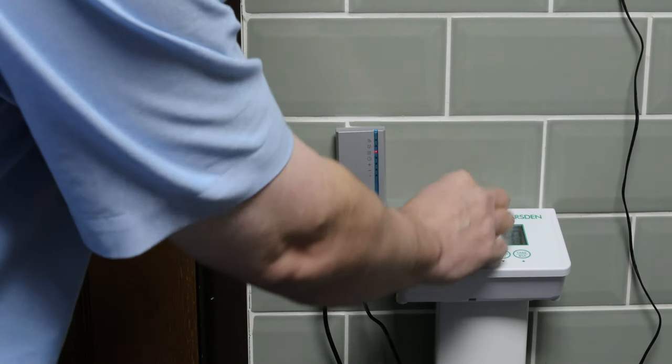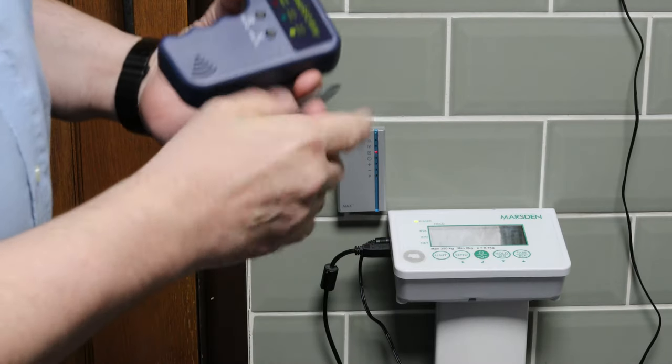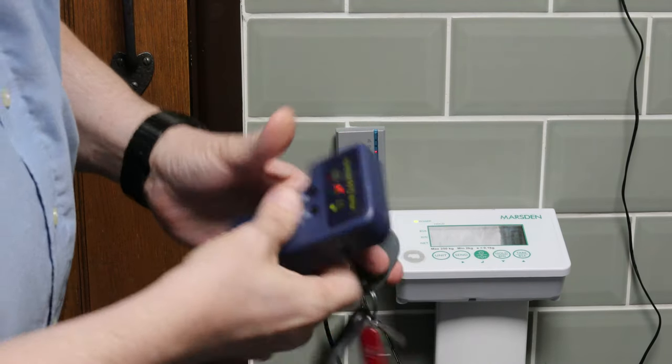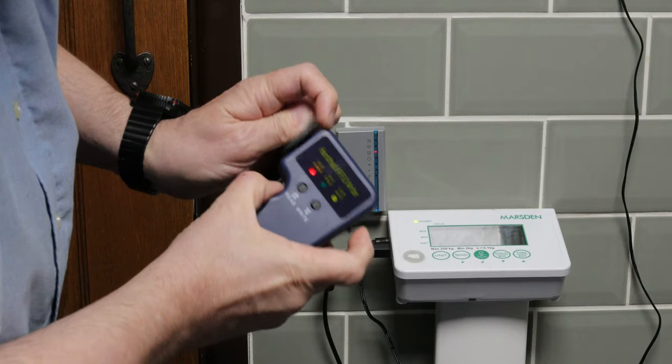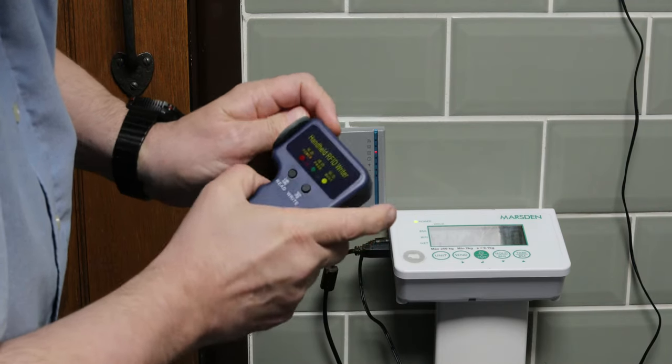So, let's do this. Turn it on, point it at my key fob which could be through my pocket and press read. It says pass.